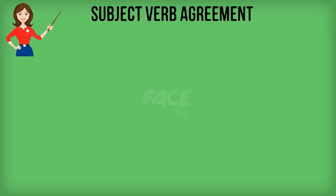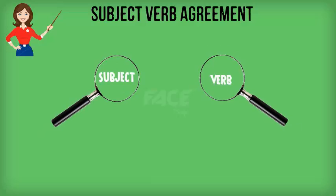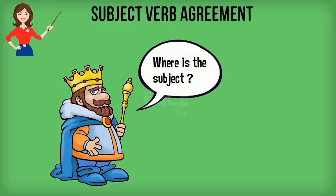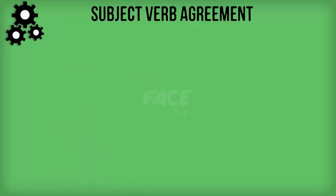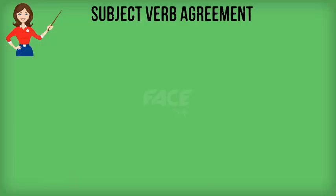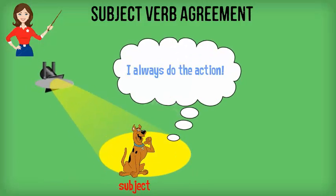To find whether the subject and verb are in agreement, first find the subject and the verb in the sentence and then check for their agreement in number. There are sentences where finding the subject might be confusing. Example: 'From the ceiling hung the chandelier.' The verb is 'hung.' Who or what hung? The chandelier. Hence, the chandelier is the subject here. The subject is always the doer of the action.